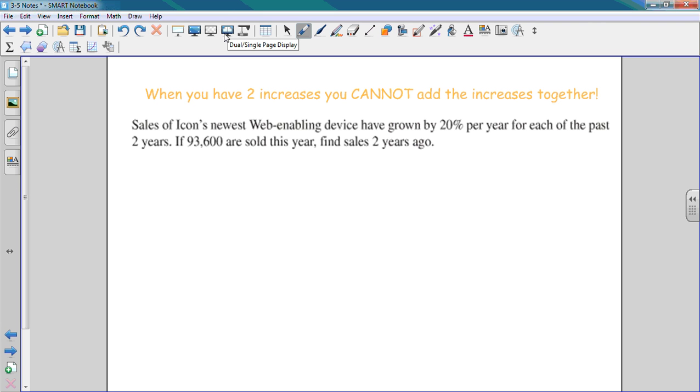Sales of Icon's newest web-enabling device have grown by 20% per year for each of the past two years. If 93,600 are sold this year, find sales two years ago. Common mistake: when you have two increases, you cannot add the increases together. You cannot put 40% in for R. 20% one year, 20% the next - that doesn't equal a 40% increase. You actually have to do the equation twice.